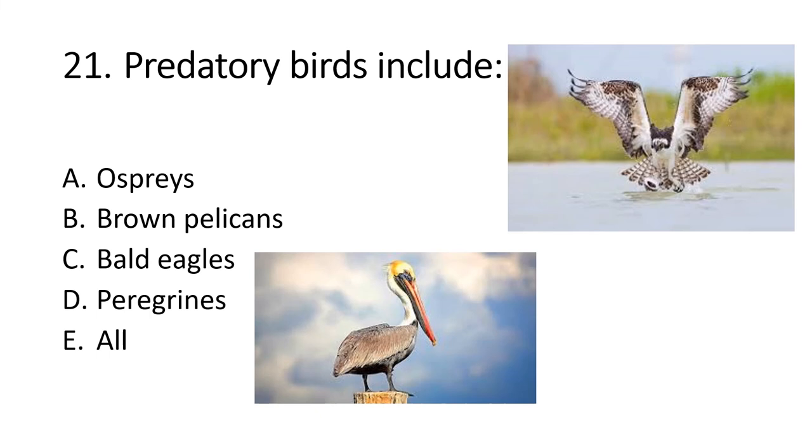Question 21: Predatory birds include... Given options are A: ospreys, B: brown pelicans, C: bald eagles, D: peregrines, and E: all. The right option is E: all.